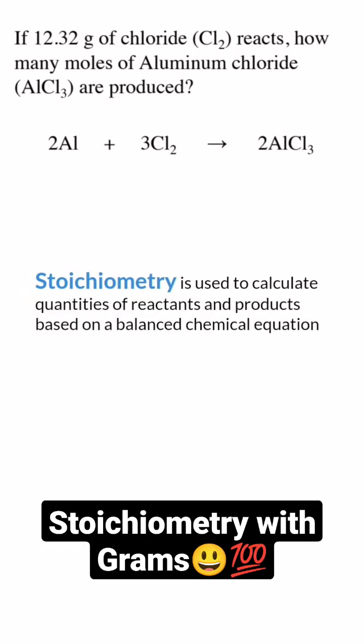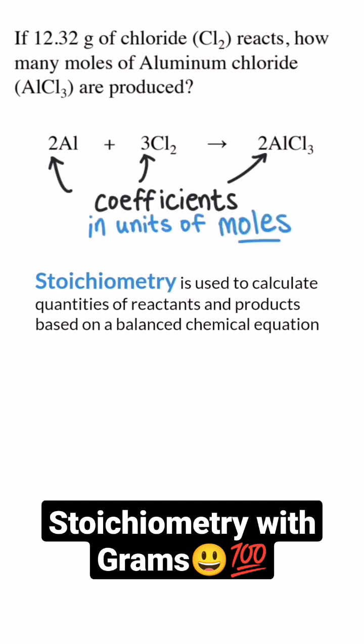Stoichiometry is a technique used in chemistry to calculate quantities of reactants and products based on a balanced chemical equation. A balanced equation includes coefficients that are in units of moles and relate the chemicals to one another in ratios.